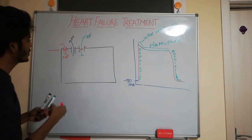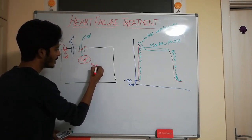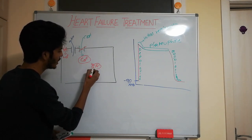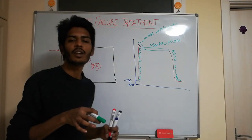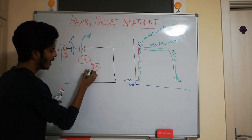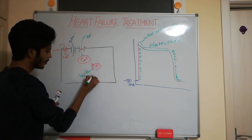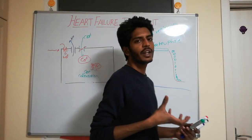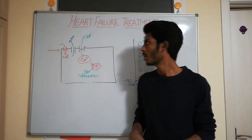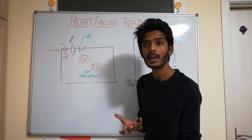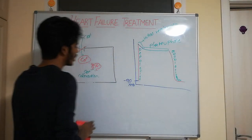When calcium entered the cell during the action potential, it goes and stimulates the sarcoplasmic reticulum — the intracellular calcium storage. The sarcoplasmic reticulum then releases more calcium into the cytoplasm. When this calcium causes contraction, we call it the inotropic effect. A positive inotropic effect means more contraction. In heart failure, the heart is not pumping well, so if we increase intracellular calcium, the heart can contract much stronger.